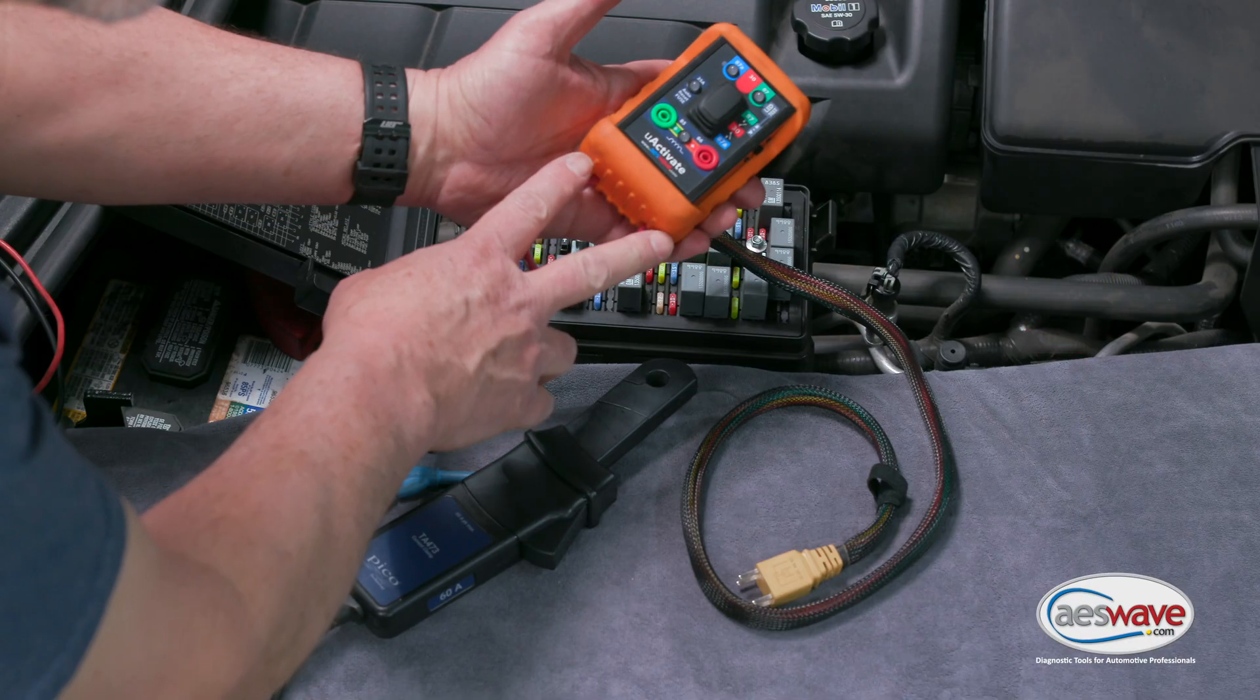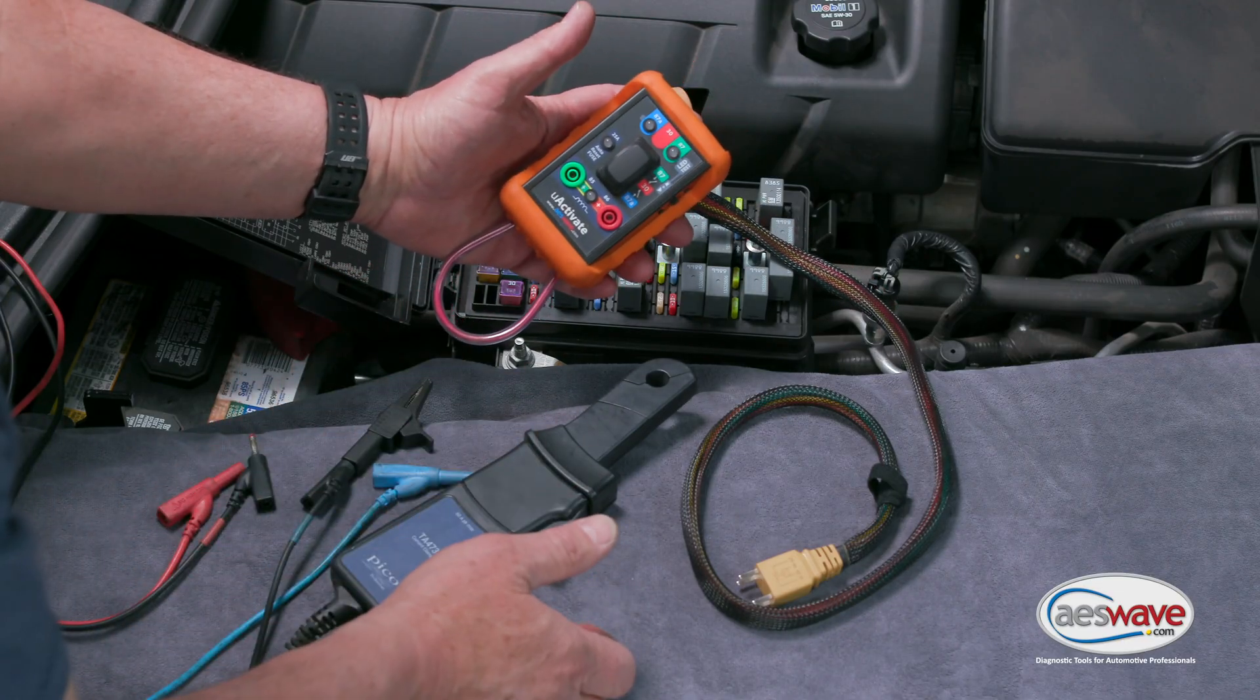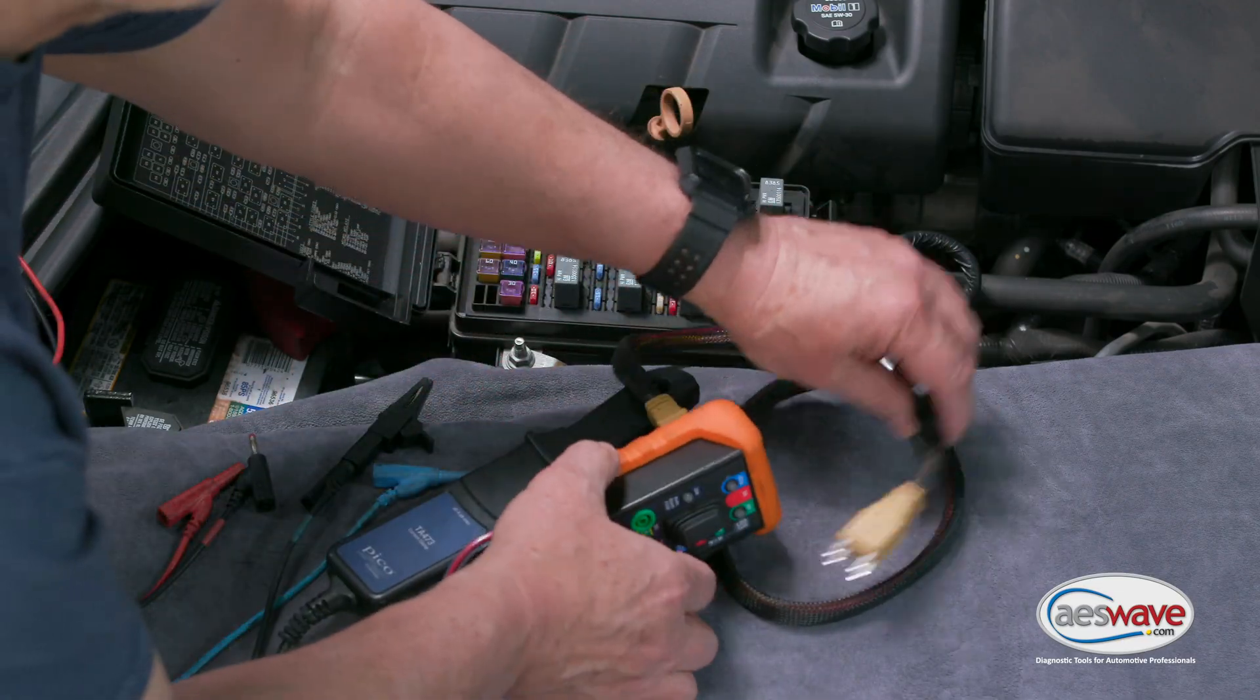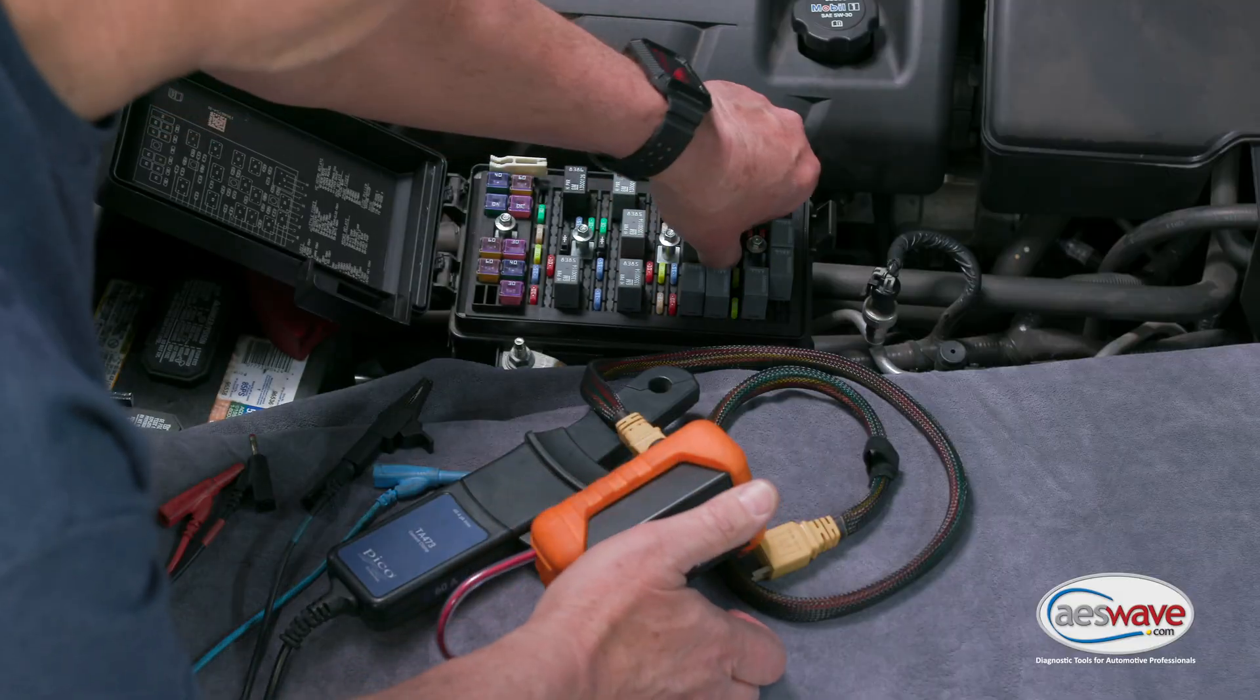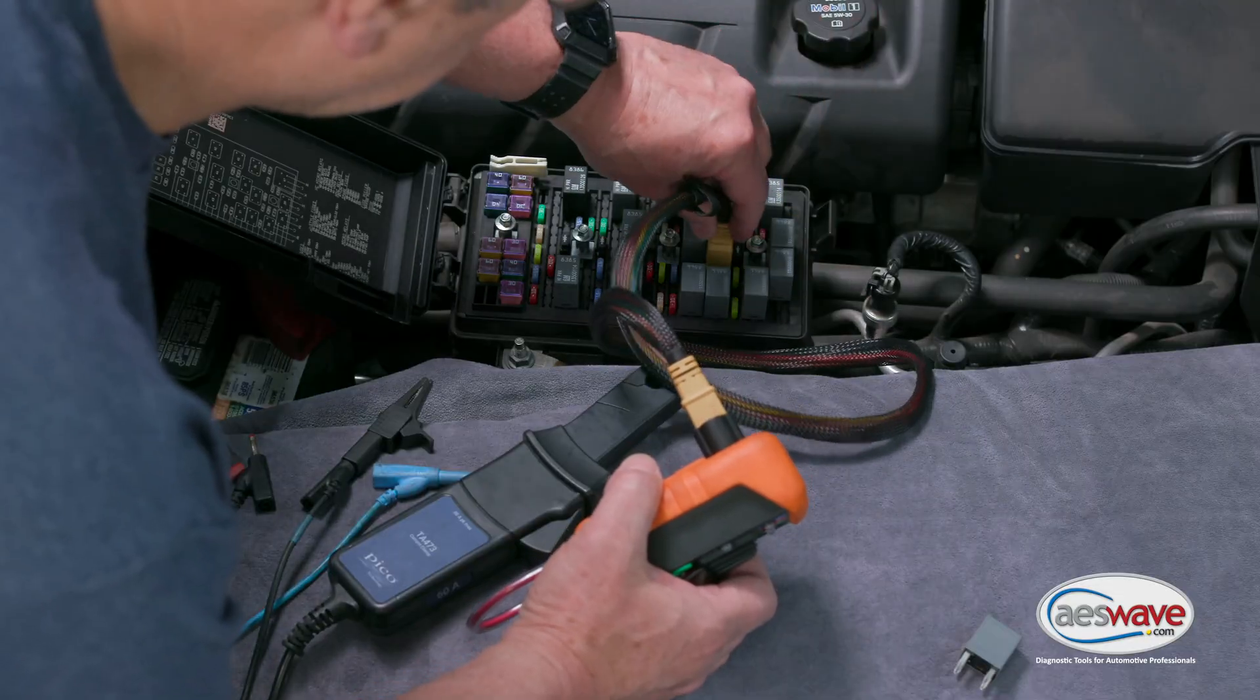We have an inductive loop here on the bottom of the Uactivate that we covered in the last video. So we identified the relay, we're going to pull that out to get the appropriate connector, and we're going to insert it here.